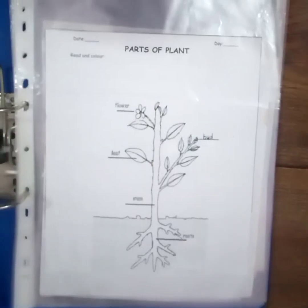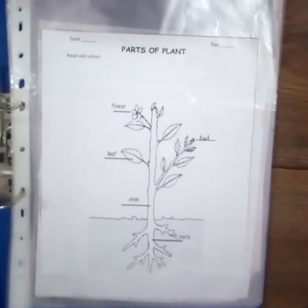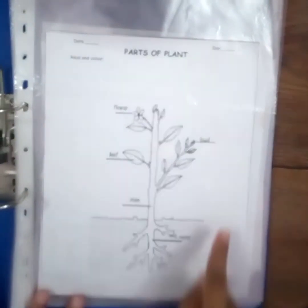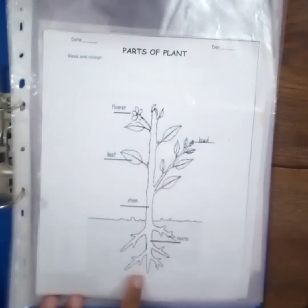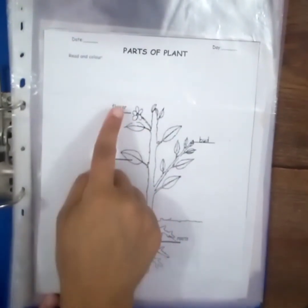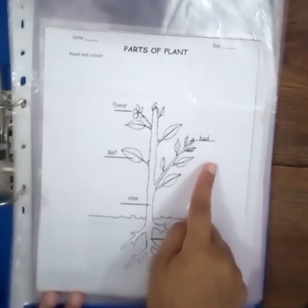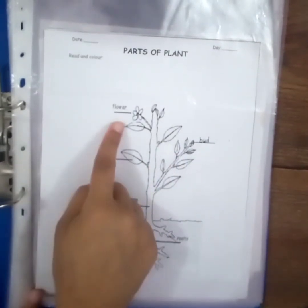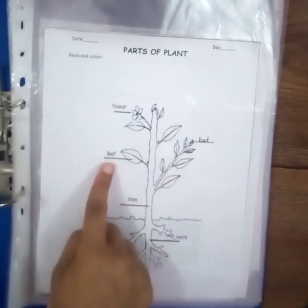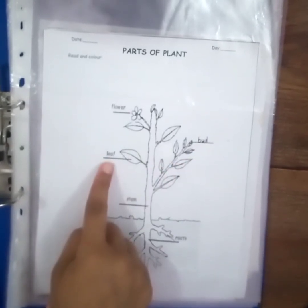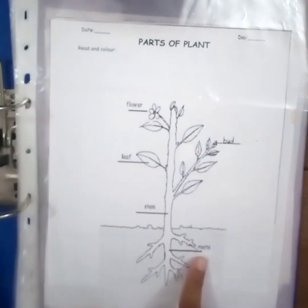Now let's start to solve some worksheets to recall the parts of a plant. What is this? It's a plant. And these are parts of a plant: flower, bud, leaf, stem, and roots.